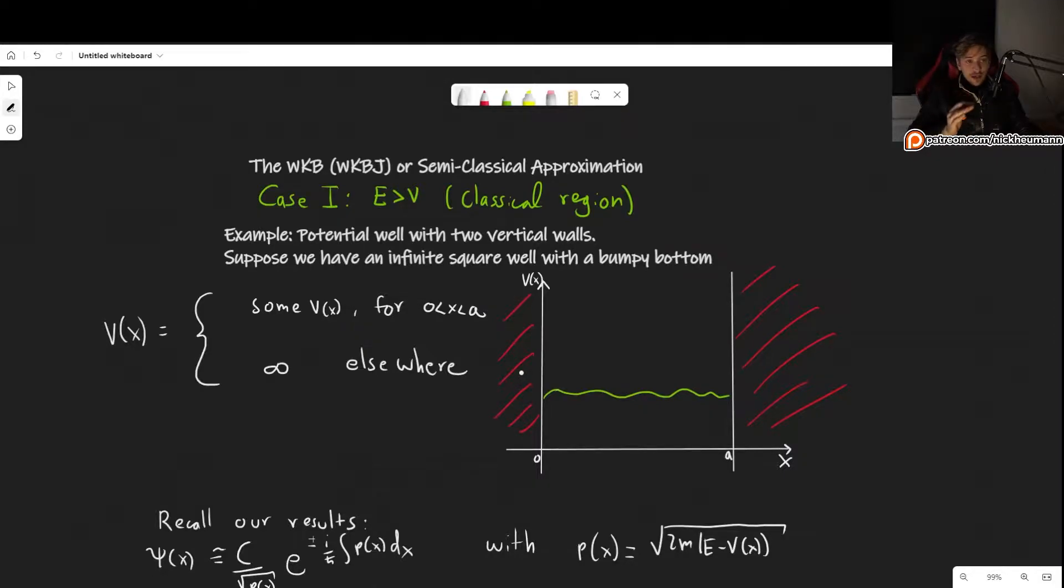We won't go into specifics in this video. We will derive a general formula and I'll show you how to work with it later. So the potential here just to be clear is infinity everywhere except for between 0 and a where our potential is some unspecified v of x.